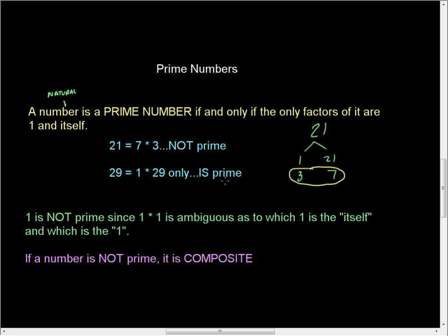Now, it might seem as an exception to a rule, and I've been screaming and hollering that math contains no exceptions. This is the explanation that I give for it. One is not a prime number. And the only rational reason I've been able to come up with this at this time is that when you multiply or factor down 1 into 1 times 1, you have to ask yourself, well, which one is the itself and which one is the 1? Because in the definition, the only factors of it are 1 and itself. And so, it's kind of ambiguous.